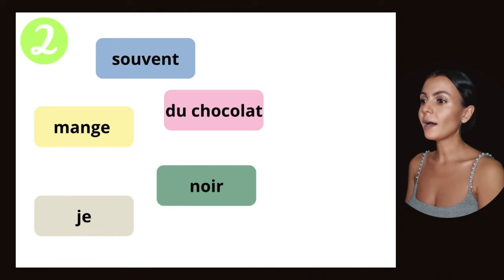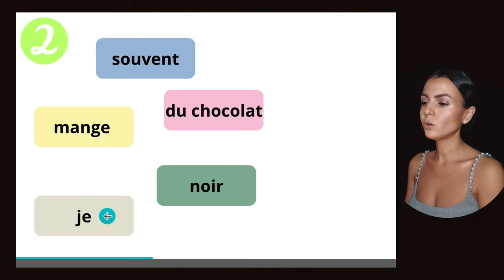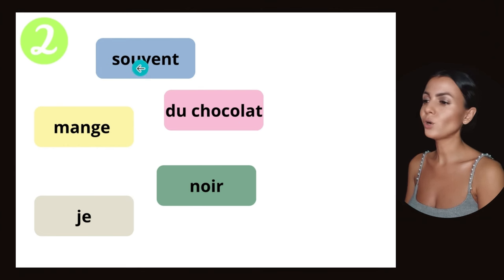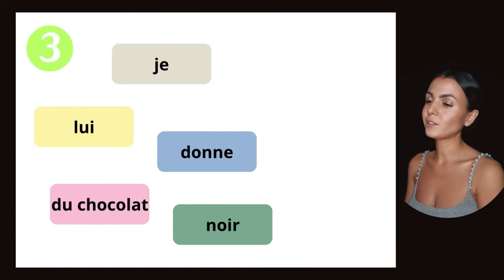Number two: I often eat black chocolate. So we have: noir (black), du chocolat (chocolate), souvent (often), mange (eat). Try to put in the correct order.